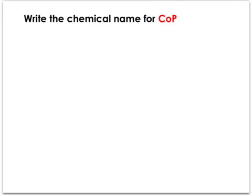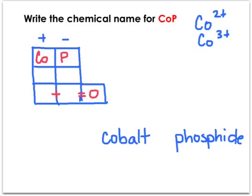Pause and try the next example on your own. For CoP — looking up cobalt on the periodic table, the choices are a plus two ion or a plus three ion. Phosphorus only has a charge of negative three, so my positive column must equal positive three. Therefore that one cobalt must have an ion of positive three to balance the phosphorus with negative three, giving cobalt three phosphide.